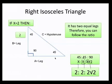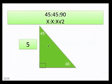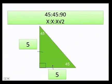If one leg is 2, the other side is 2, and the hypotenuse is 2√2. Let's do more examples. If this side is 5, the other side is going to be 5 as well. Therefore, the hypotenuse is 5√2.